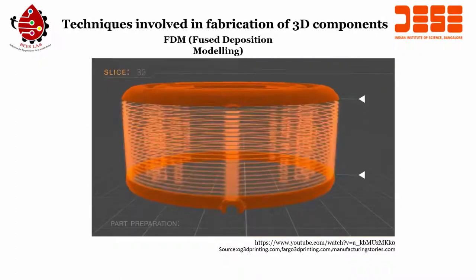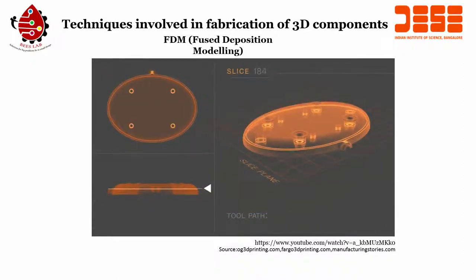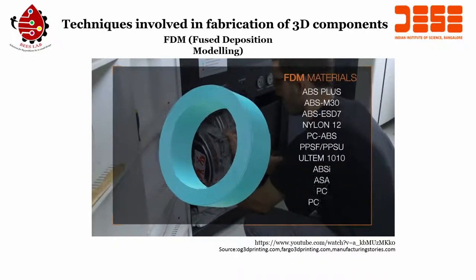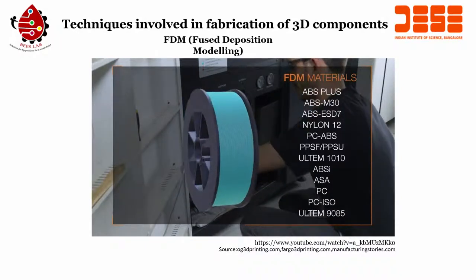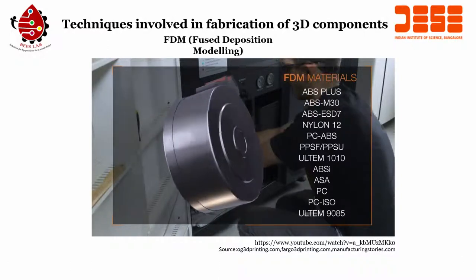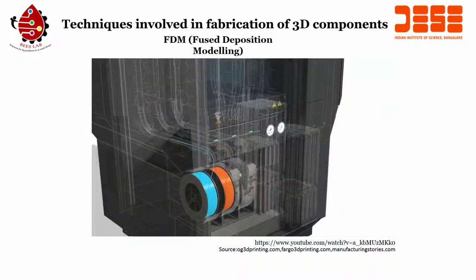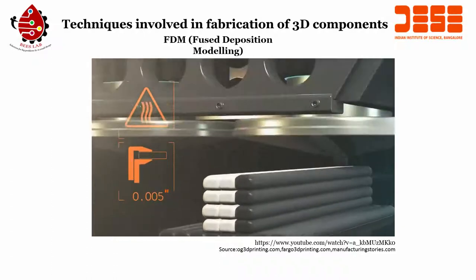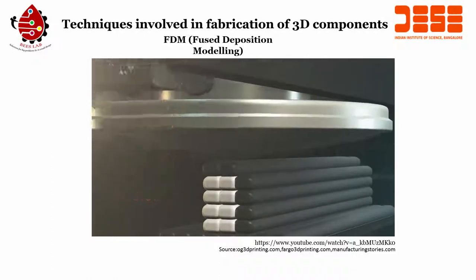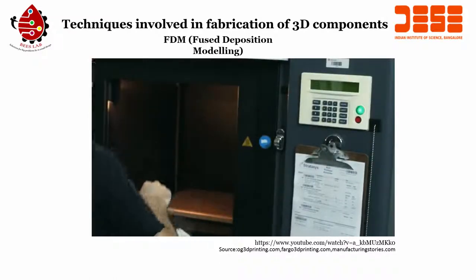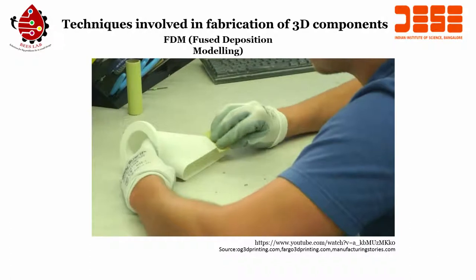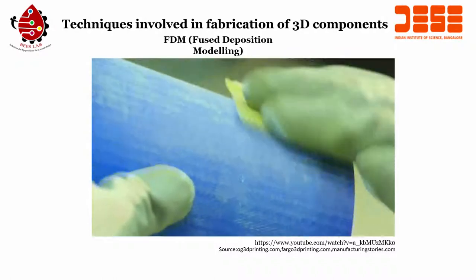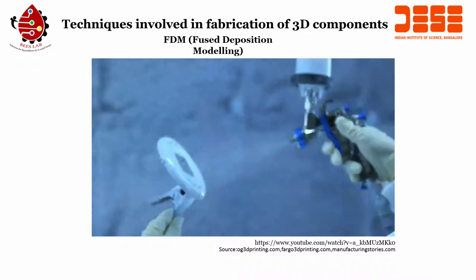The software takes a 3D data file and slices it into layers, creating a tool path that is sent to the machine. The raw material is produced in a filament form, like fishing line, wrapped around a spool as a cartridge of raw material. That material is fed up through the machine to the head where it is liquefied and extruded in fine layers. The support material is extruded at the same time, and layer by layer the part grows. When the part is completed, it is removed from the build platform and the support material is removed. Post-finishing operations can smooth out those layers through hand finishing or cosmetic paint.